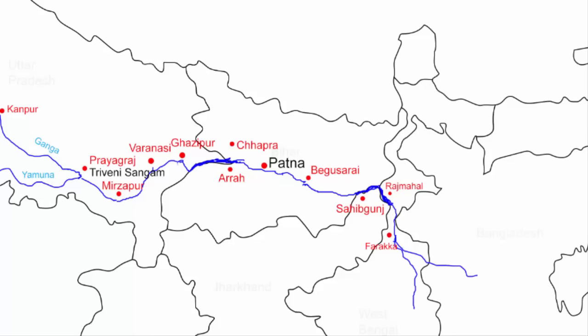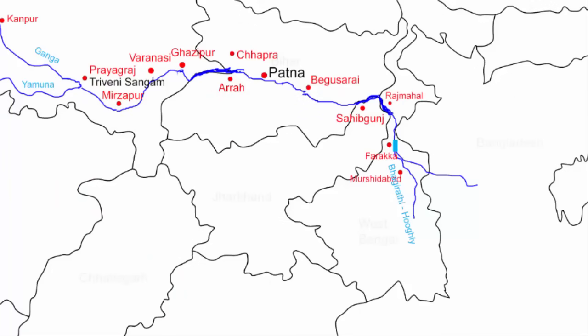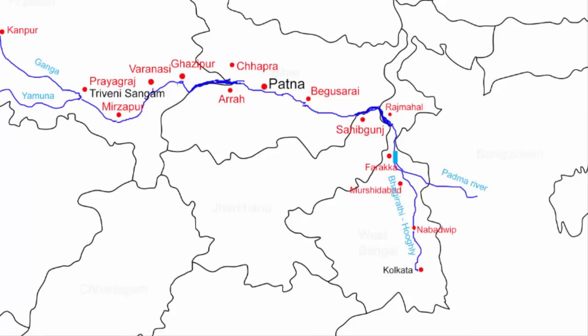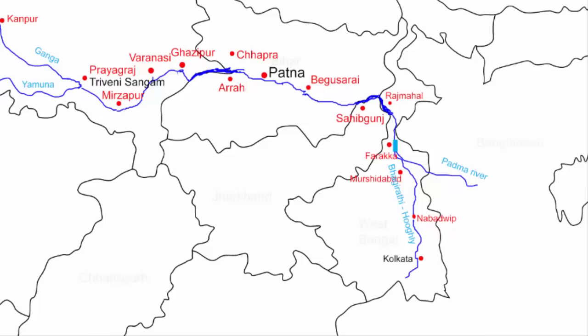Ganga enters West Bengal near Rajmahal and flows in a southeasterly direction. Near the town of Farakka in Murshidabad district, it divides into two parts — becoming a distributary. The Farakka Barrage was created in 1975 to divert water to the Bhagirathi-Hooghly river system. One branch enters Bangladesh as the Padma river, while the other flows through West Bengal as the Hooghly-Bhagirathi river, passing Murshidabad, Nabadwip, Kolkata, and Howrah before emptying into the Bay of Bengal near Sagar Island.